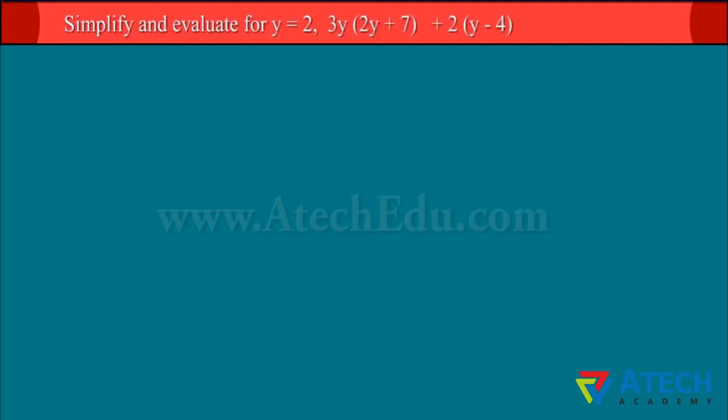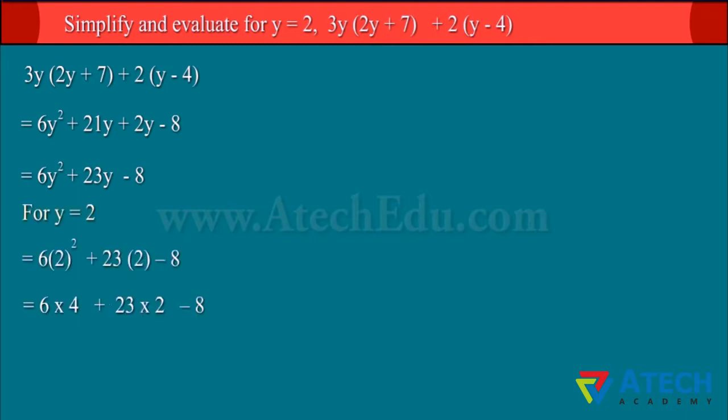Sometimes, we are required to evaluate an algebraic expression for some value of the variable. For such cases, we need to simplify the expression and then apply the value of variable. Upon simplifying the expression, we get 6y² + 23y - 8. When we put value of y = 2, we get 62.